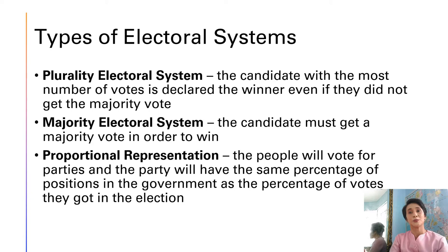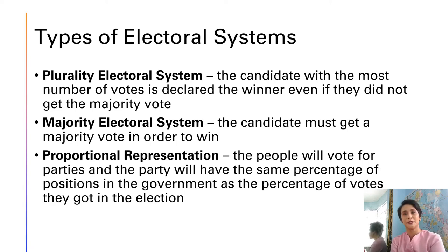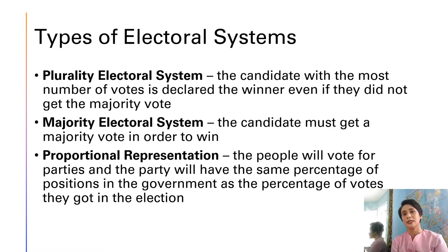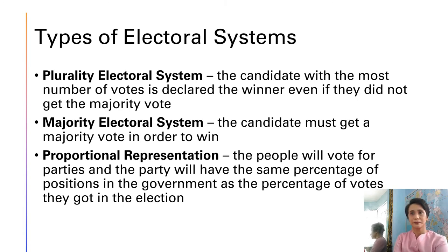The third type of electoral system is proportional representation, wherein people vote for parties and the parties receive the same percentage of positions in the government as the percentage of votes they got in the election. This is also the system used when we elect party list representatives. For example, if there are 100 votes and the first party receives 70% and the second party receives 30%, and there are 100 positions, then the first party gets 70 positions and the second party gets 30.